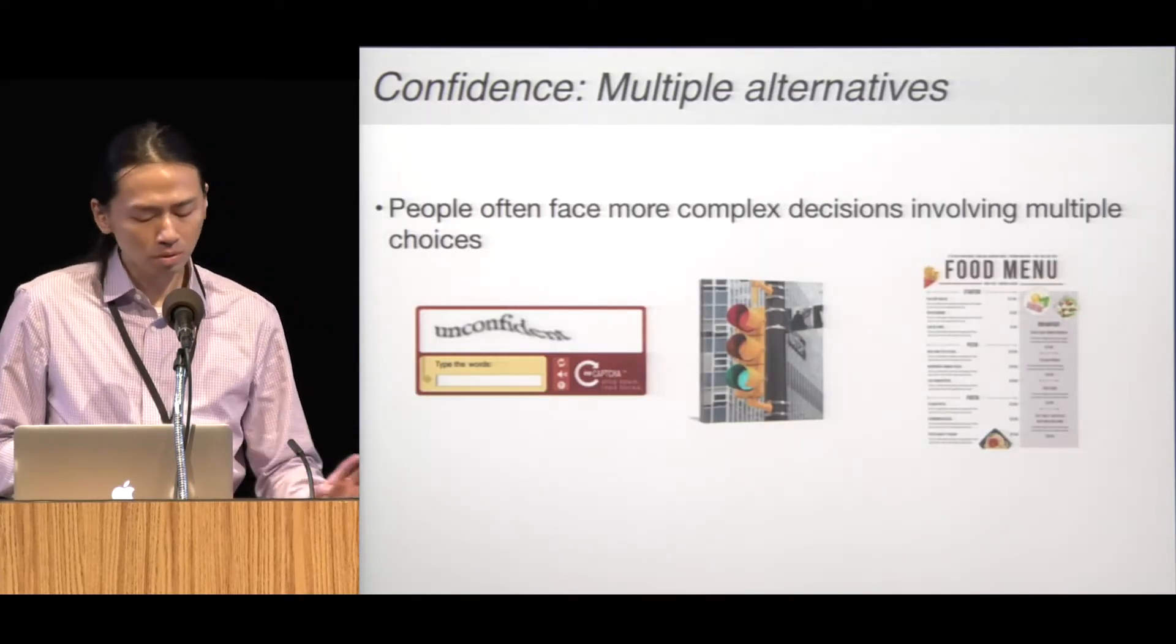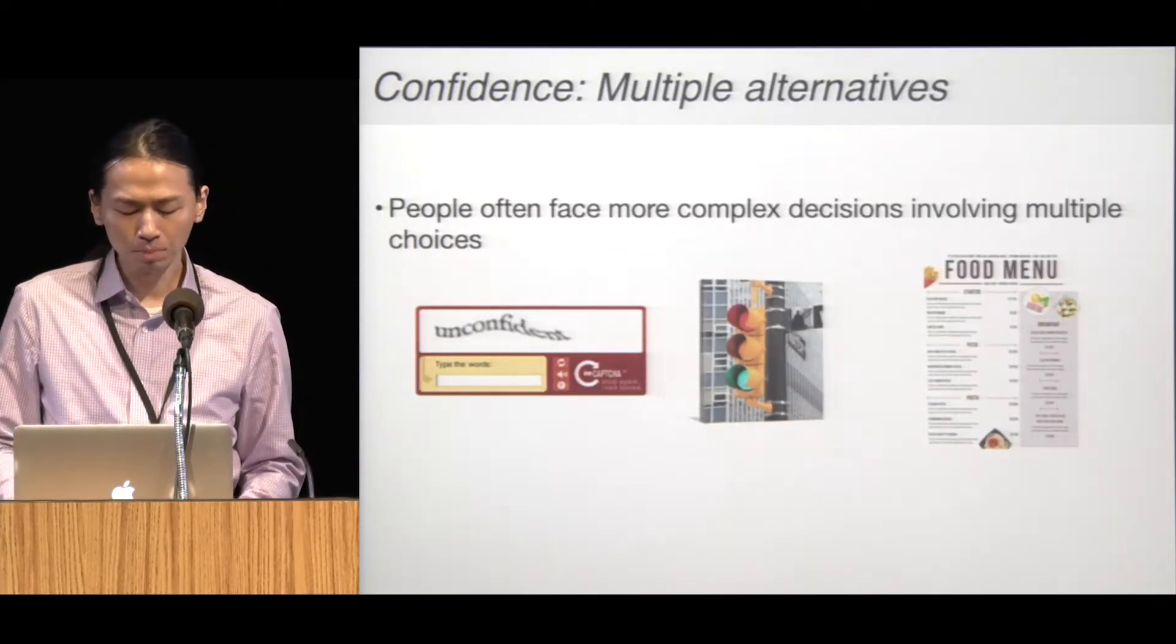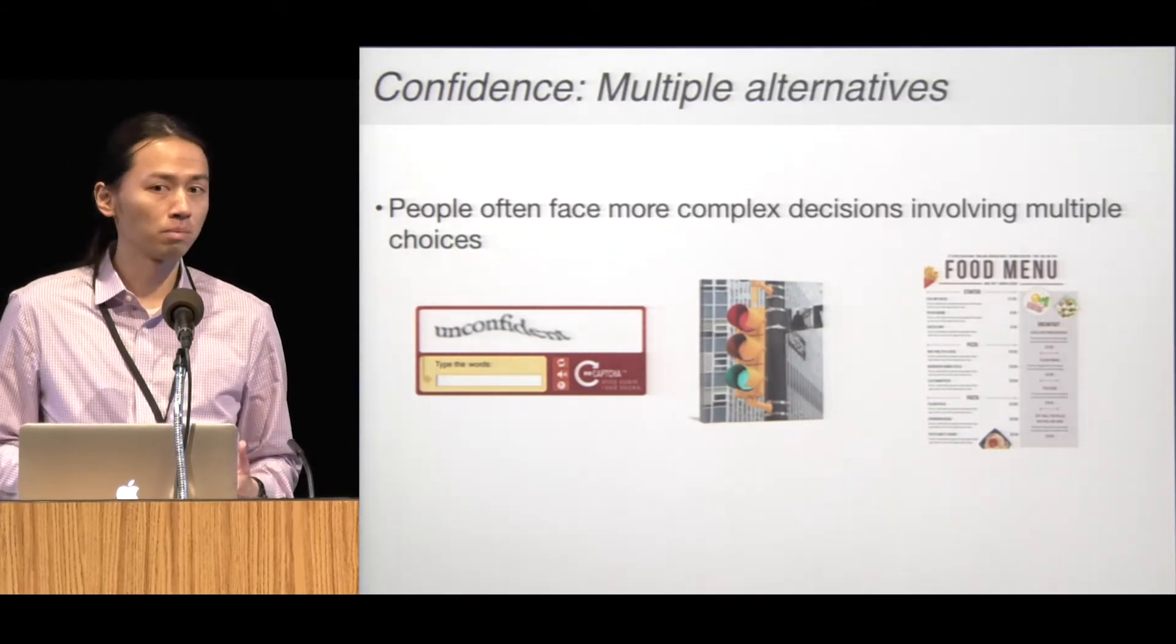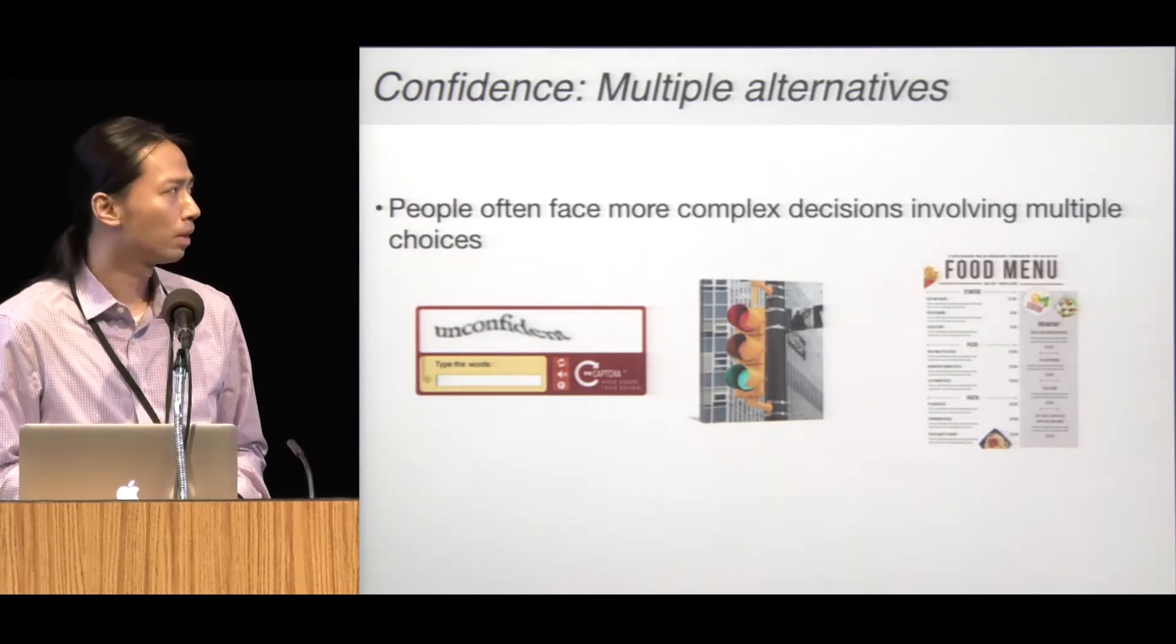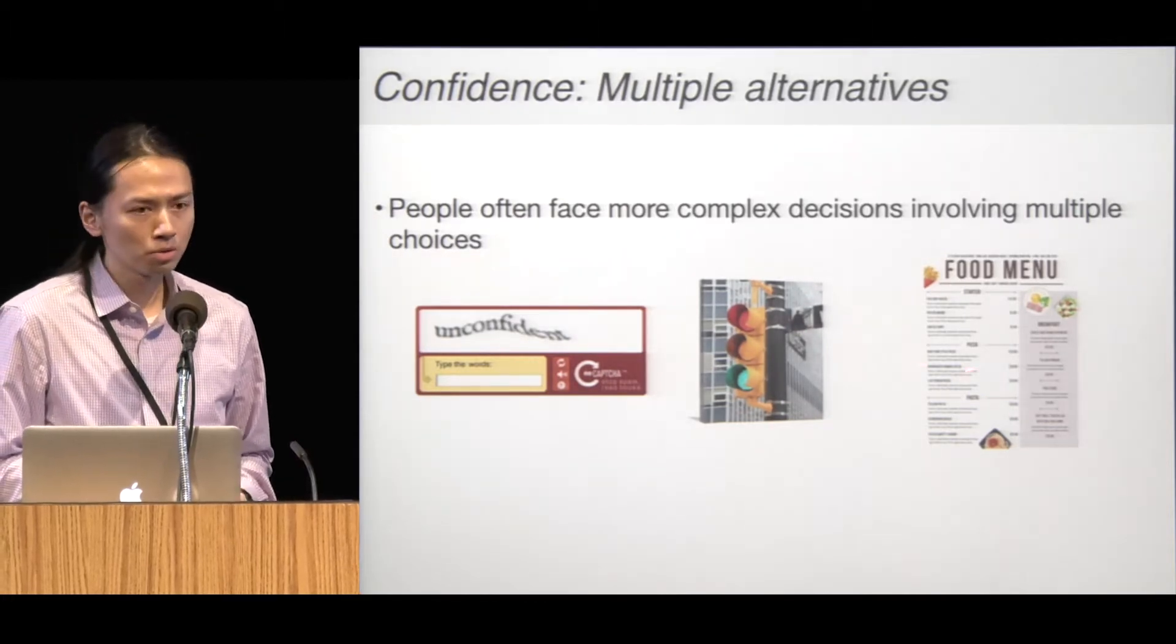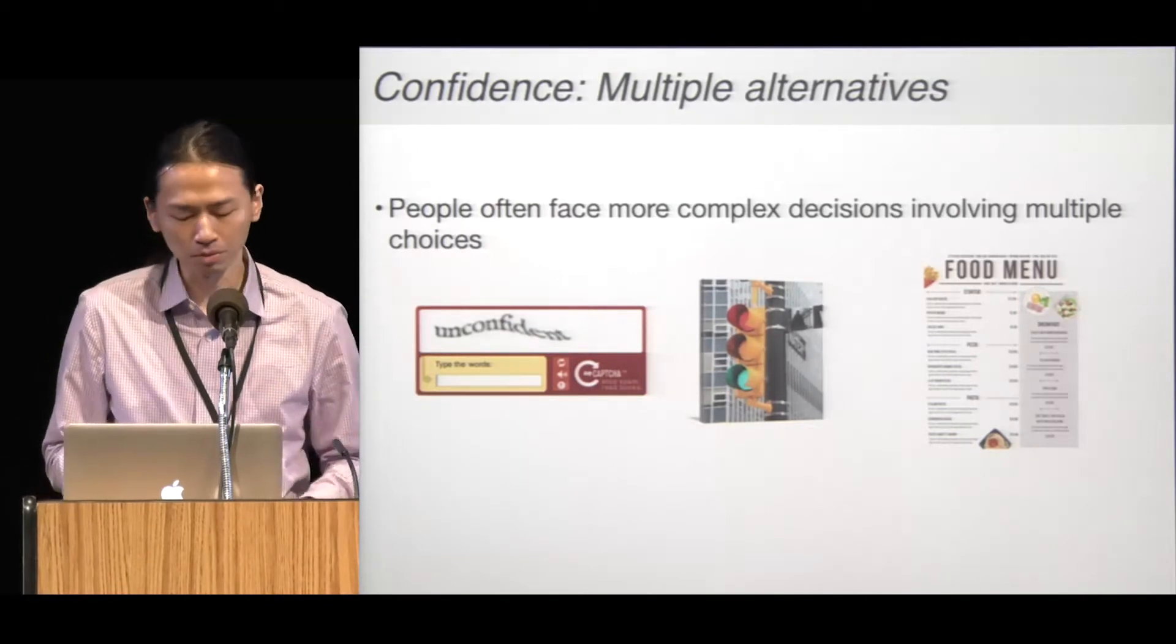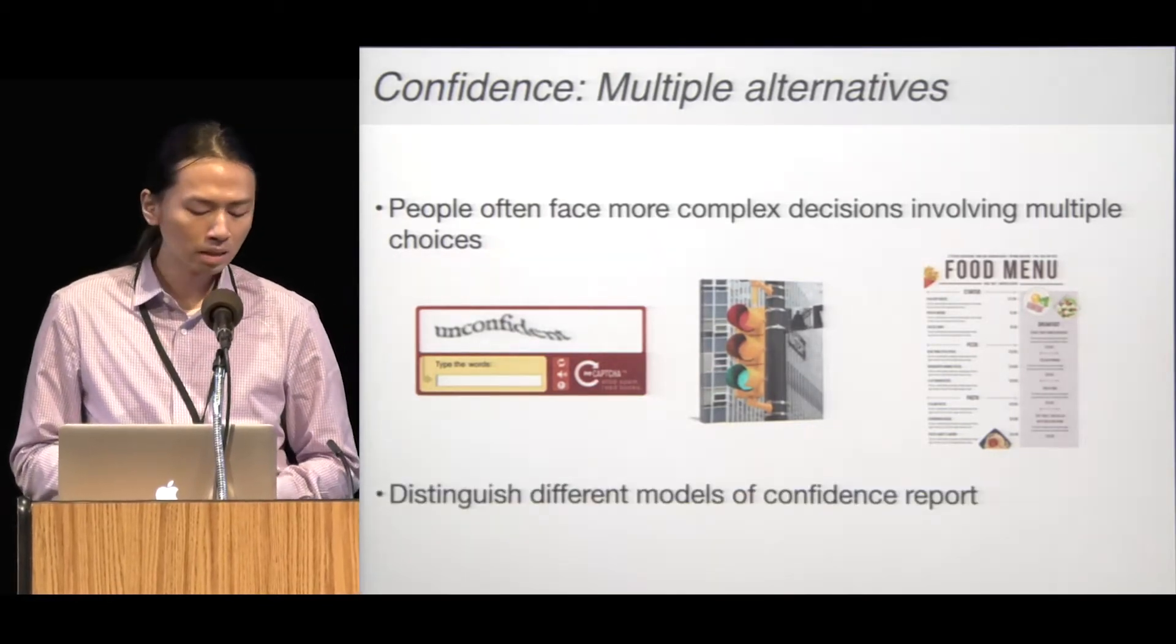While two-choice task is a popular experimental protocol, in daily life we often face decisions involving multiple options. For example, to identify which traffic light is on or to pick your favorite item from the menu.